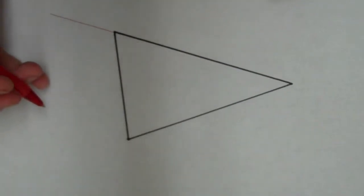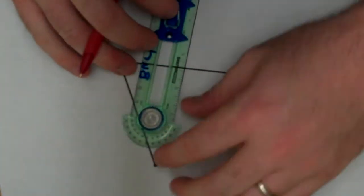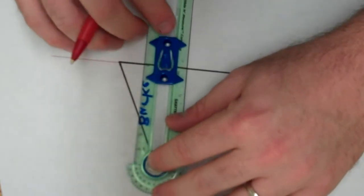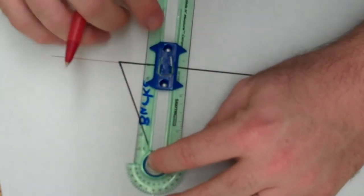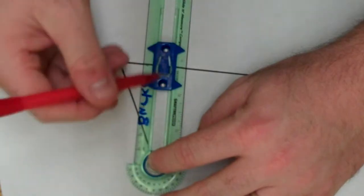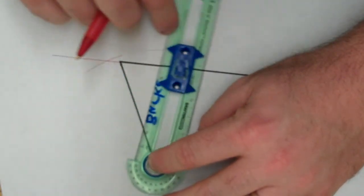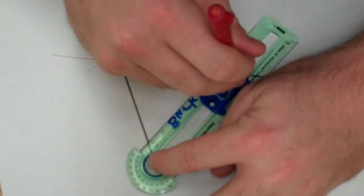So I'm just going to extend this side and then I'm going to put the point of my compass on the vertex I'm interested in and just open up my compass so it's farther than the side of the triangle, and then I want to mark over here and I want to mark over here.